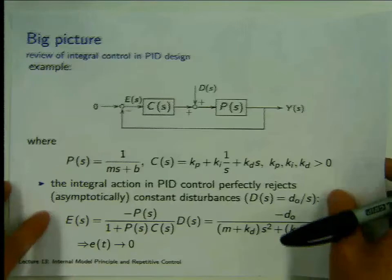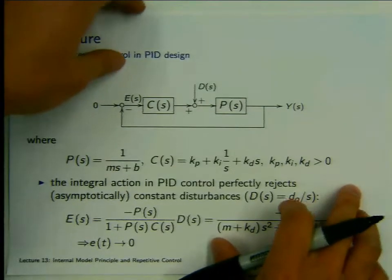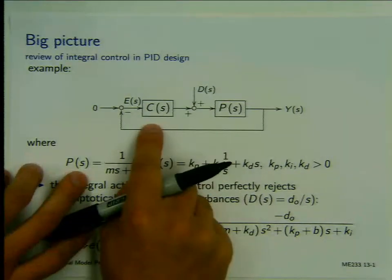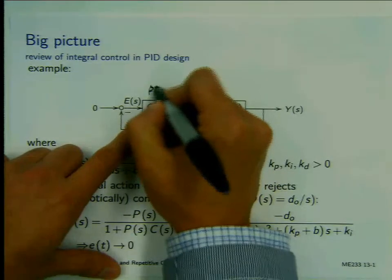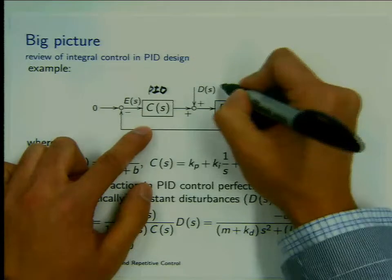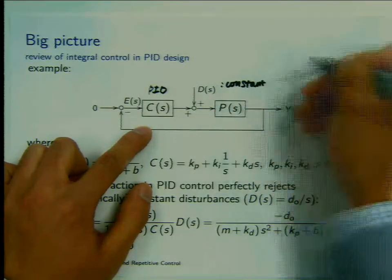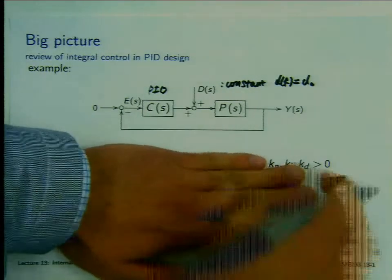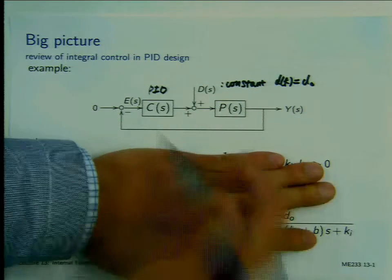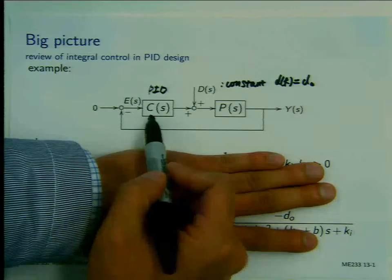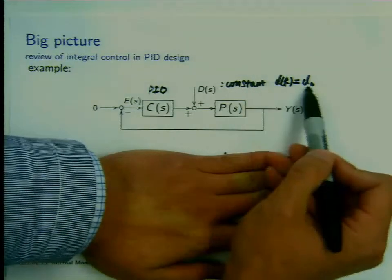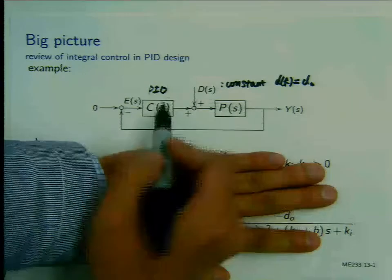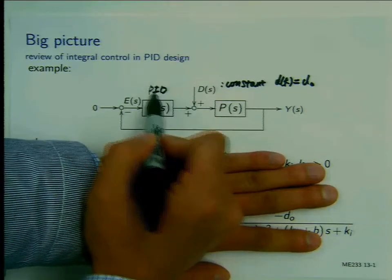I want to start with a very basic review — something you are probably familiar with from your undergraduate control class. Suppose I have a feedback system and I designed the controller C as a PID controller. The disturbance is a constant disturbance, let's say d(k) equals d0. What's the conclusion you can make from a basic PID control design? You can conclude that any constant disturbance, no matter the value of d0, under PID control, the steady-state error will be zero. That's the power of PID control — actually, it's the I action, the integration action, inside the controller.